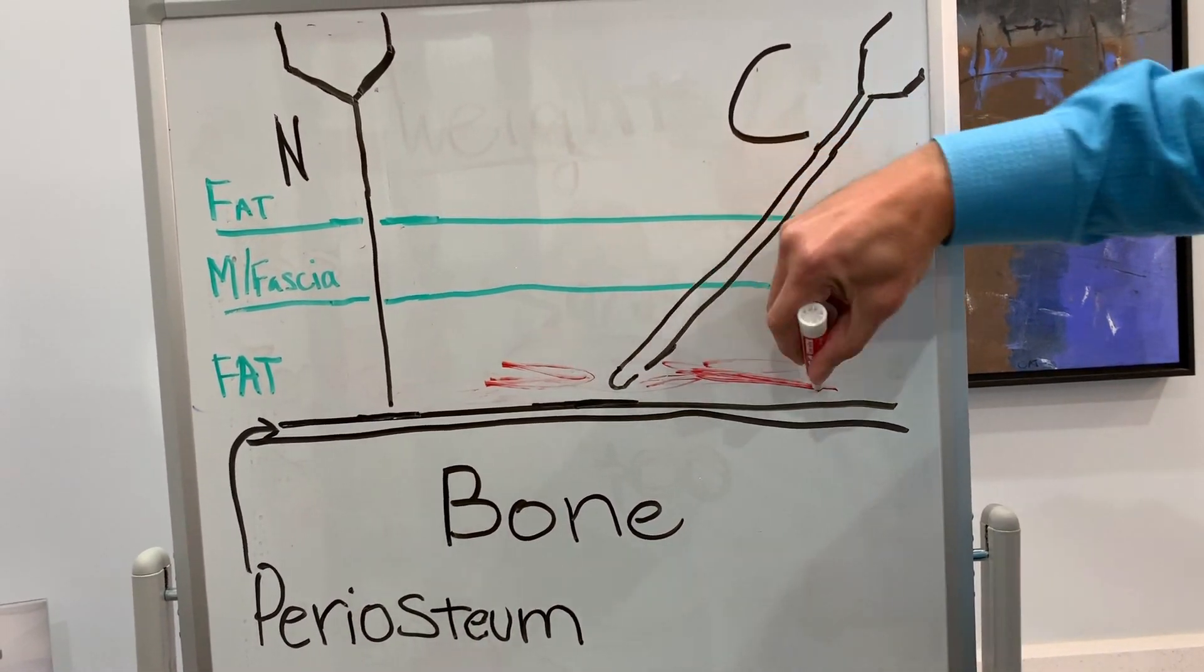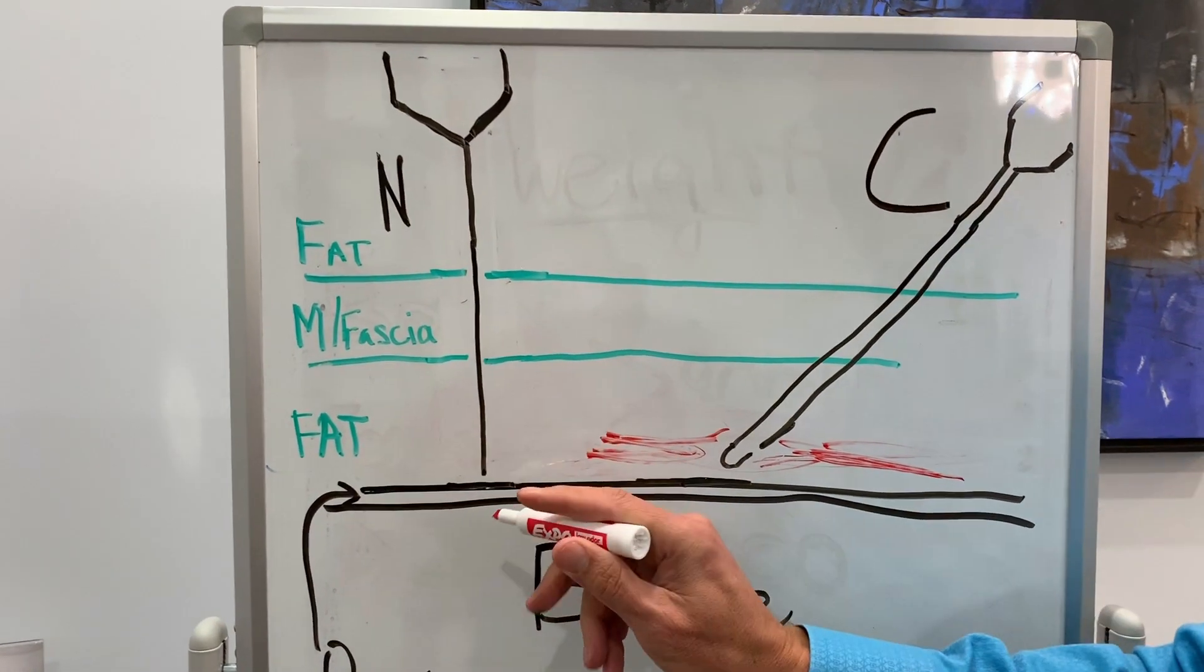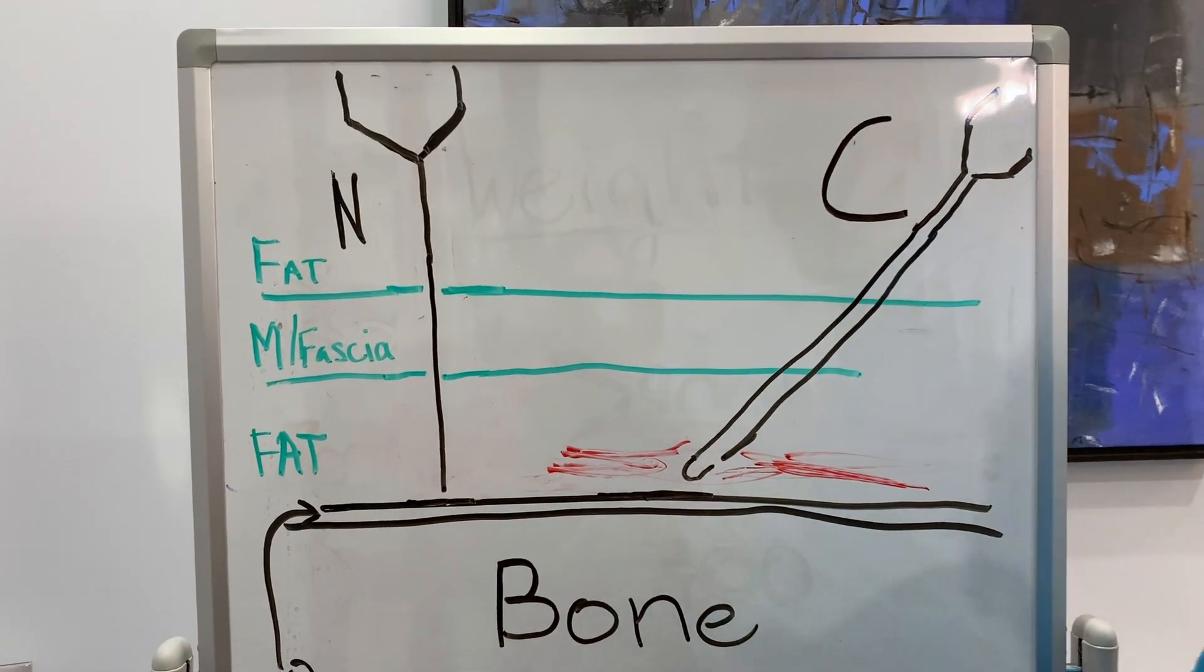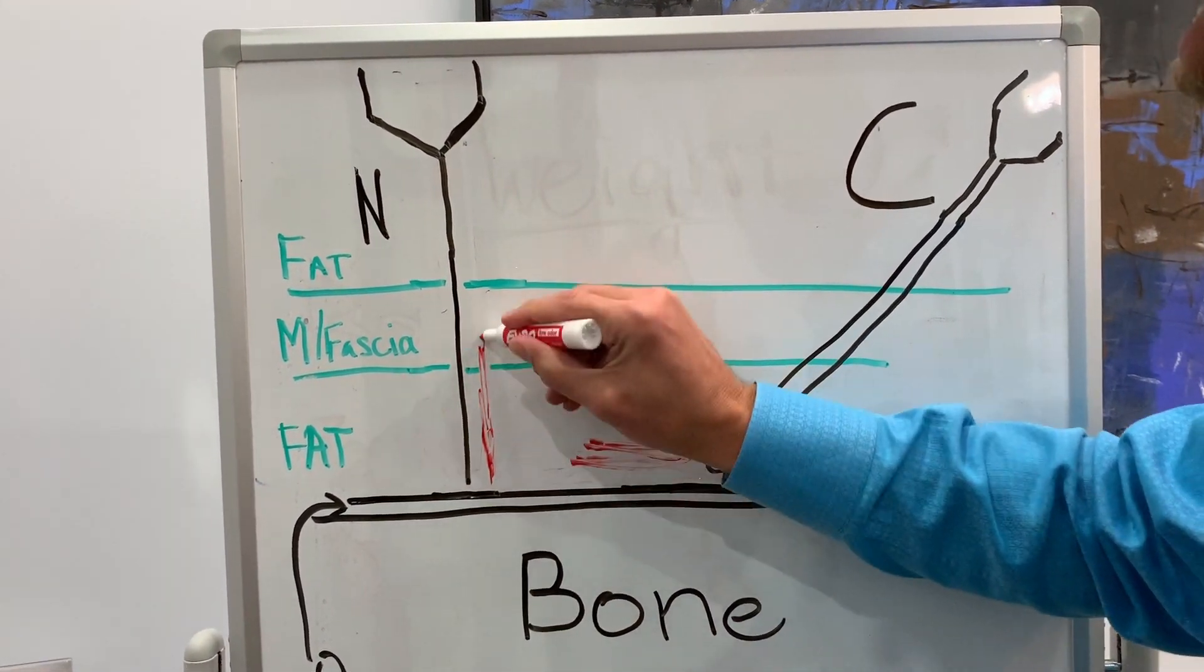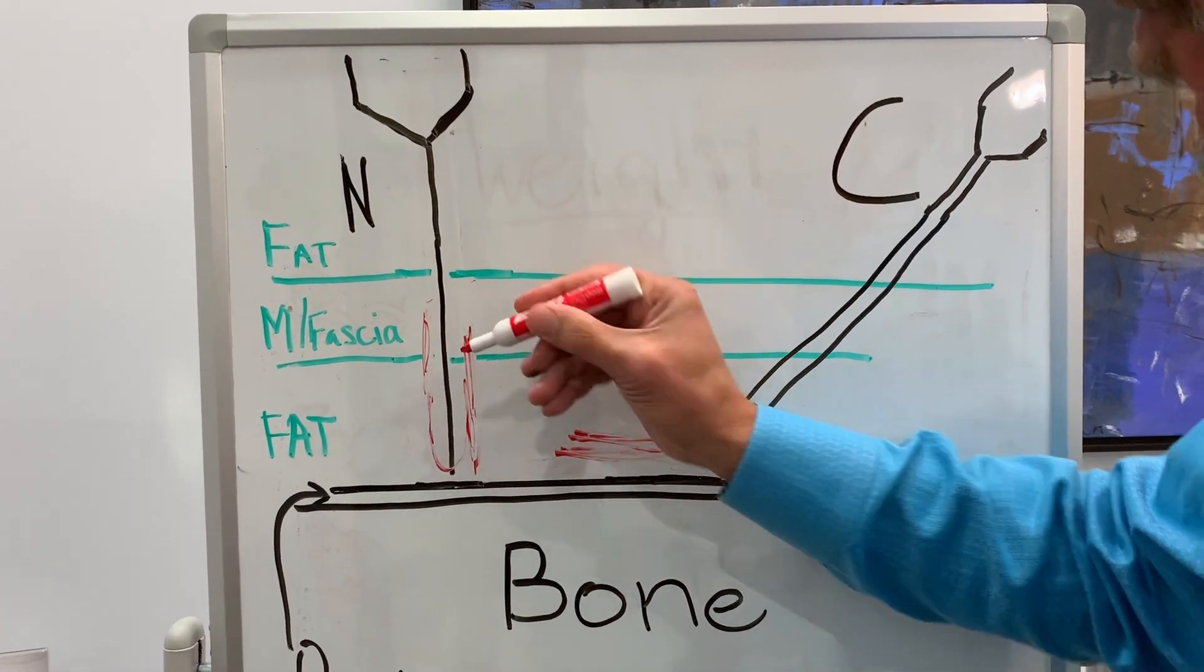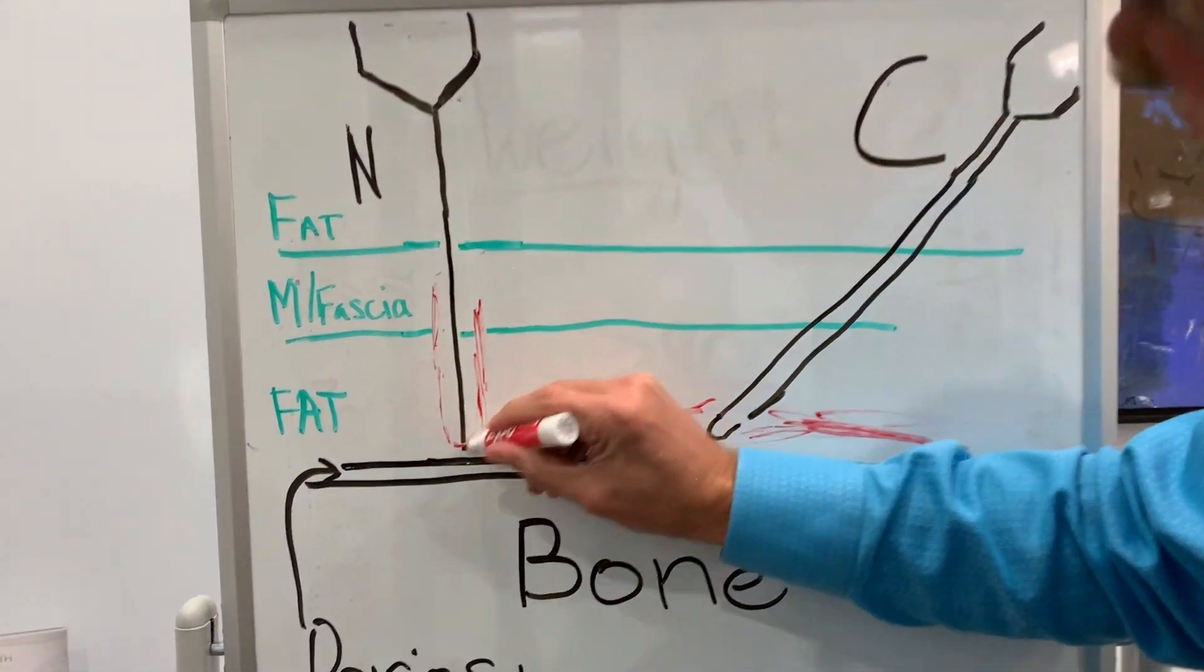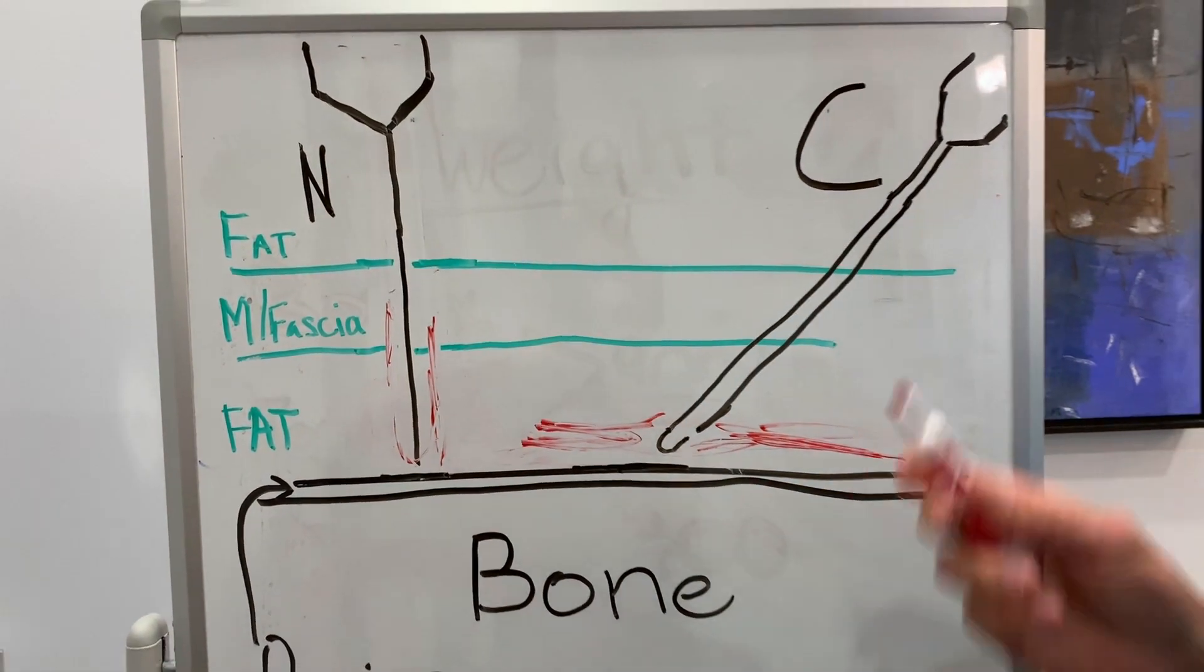What they found is when they injected filler with a needle in the superperiosteal plane, 60% of the time the filler actually went into a different plane. 60% of the time, the filler was not actually where you thought it was, it traversed a plane.